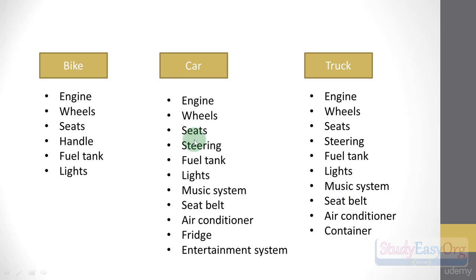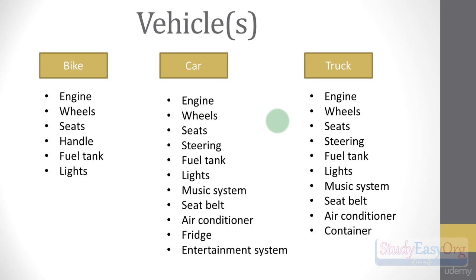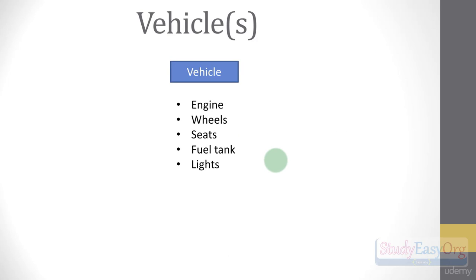There are also functionalities involved with these entities, which we will talk about in a couple of minutes. First, let's discuss properties. If we check these properties, many of them are common — every vehicle will have an engine, wheels, a seat, a fuel tank, and lights. So briefly, there are some common properties for vehicles. All of these are vehicles, and the common properties are: engine, wheels, seat, fuel tank, and lights.